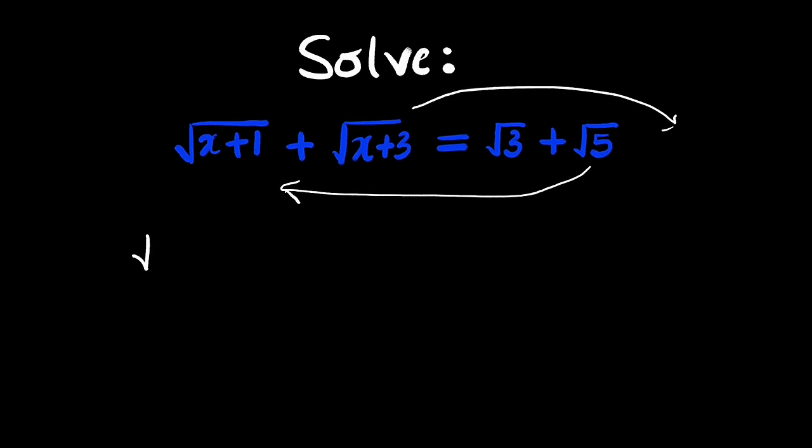So we have root x plus 1. As root 5 crosses over, it becomes negative root 5. Then to the right hand side, we have root 3. As this crosses over, it becomes negative.